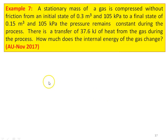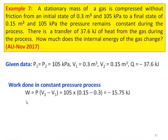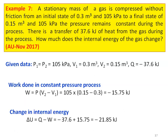Example number 7 is from the November 2017 question paper. A stationary mass of gas is compressed without friction from initial state 0.3 m³ and 105 kPa to final state 0.15 m³ and 105 kPa at constant pressure. Heat transfer from the gas during this process is −37.6 kJ. Work done: W = P(V2 − V1) = 105 × (0.15 − 0.3) = −15.75 kJ. Change in internal energy: ΔU = Q − W = −37.6 + 15.75 = −21.85 kJ.